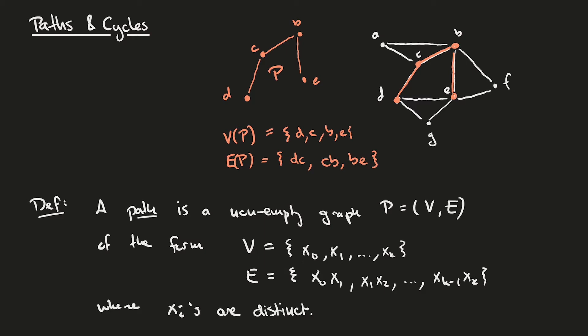We can now see that the example above conforms to this definition. So we have a set VP of distinct vertices and our edge set consists of the edges between these vertices. So we have DC, we have CB, and BE.